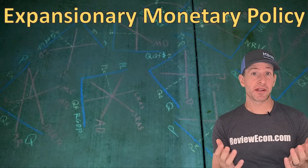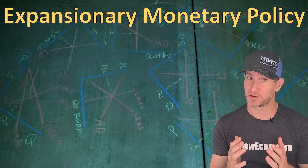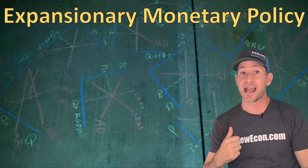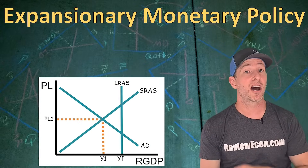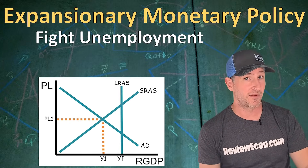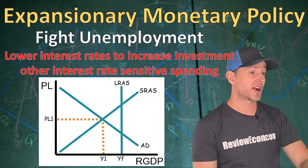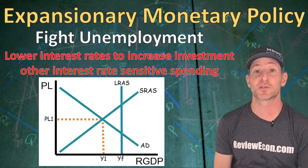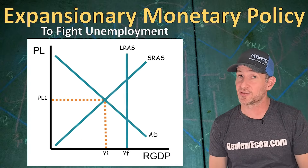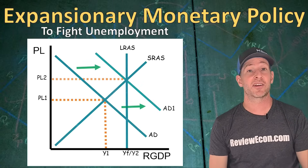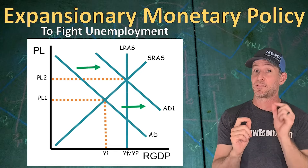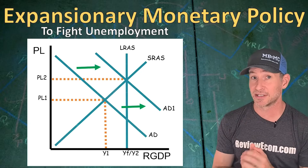Whether in a scarce or ample reserve system, central banks target their policy rate, which impacts interest rates throughout the economy. In an AS-AD model showing an economy with a recessionary gap, a central bank uses expansionary monetary policy to fight unemployment. That lowers the nominal interest rate, increasing gross investment and other interest-rate-sensitive spending, shifting aggregate demand to the right. This restores long-run equilibrium, increasing the price level and real output while decreasing unemployment.